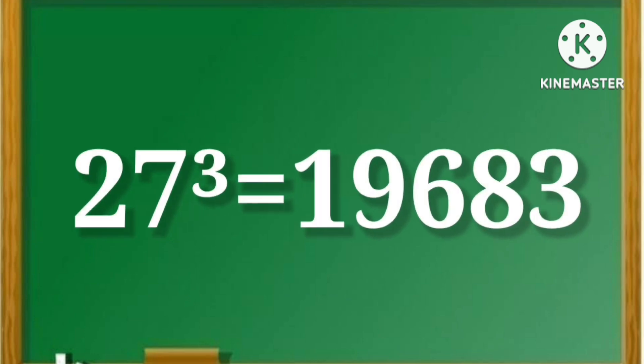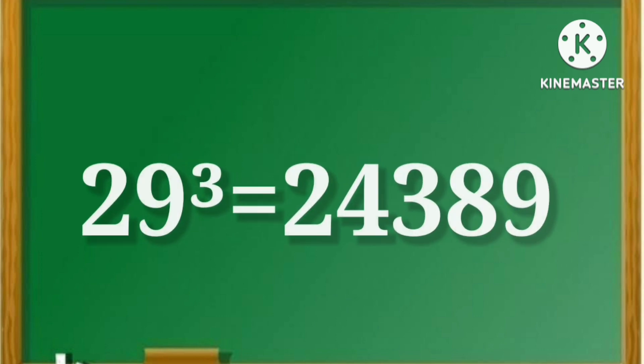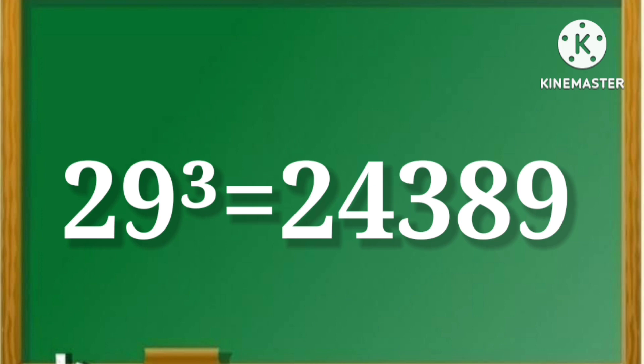27 cube is equal to 19683. 28 cube is equal to 21952. 29 cube is equal to 24389.